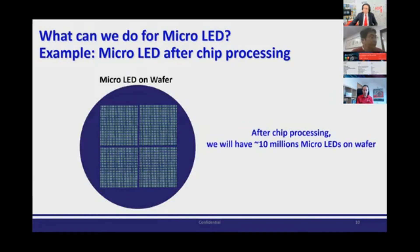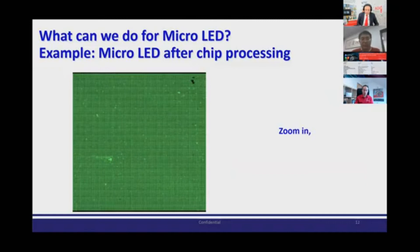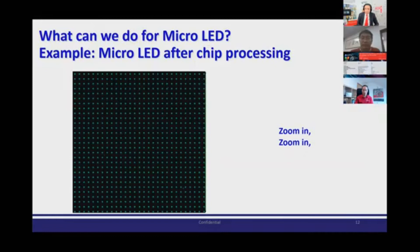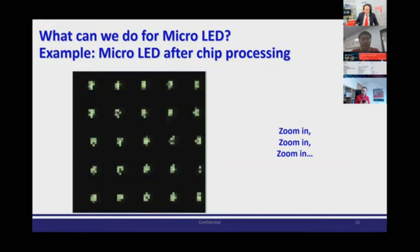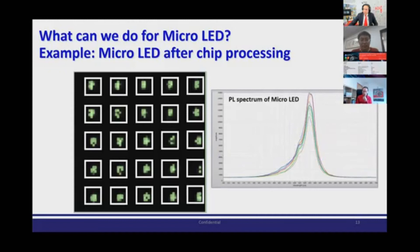What can we do for micro LED? After trip processing, we may have 10 micron micro LEDs on a wafer. In our system, we can get a high-resolution PL image of a whole 4-inch wafer in 10 minutes. At this stage, defects and error rates can be identified. If you zoom in, you will see what areas the PL spectrum is not uniform or which micro LED cannot light up with the laser. Zooming in further, you can see the PL spectrum and PL image of each individual micro LED with sub-micron spatial resolution.